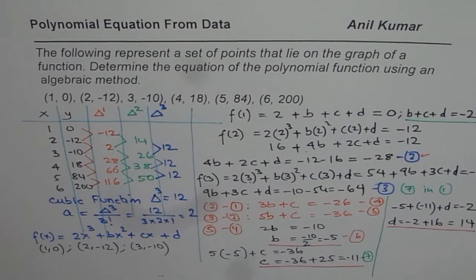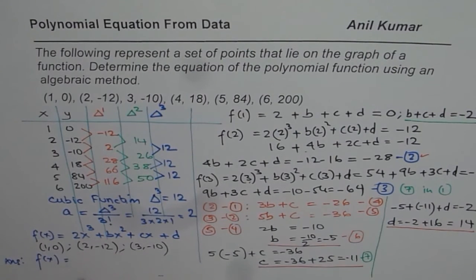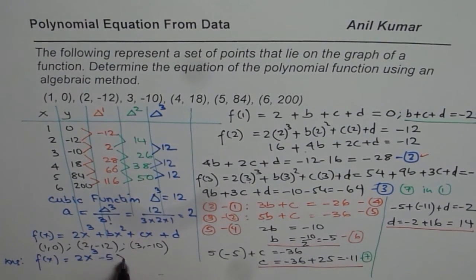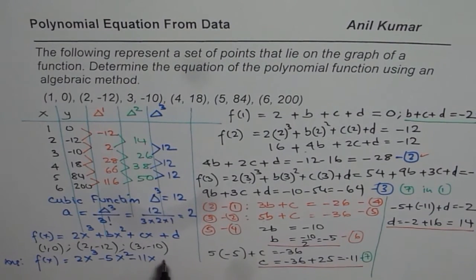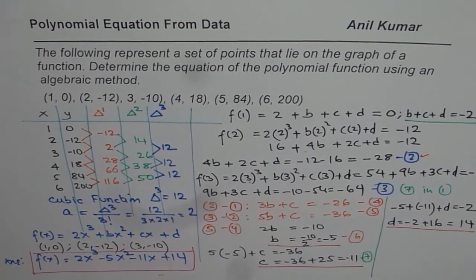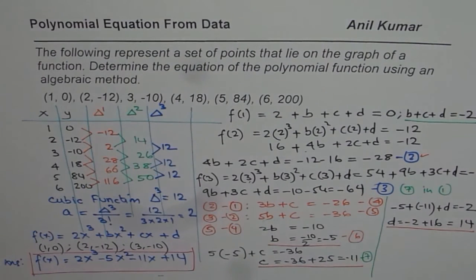Combining all values, we can write down the final function: f(x) = 2x³ - 5x² - 11x + 14. The leading coefficient a = 2 was calculated directly from the constant third difference. To check the result, we substitute the point (4, 18) and verify we get 18.